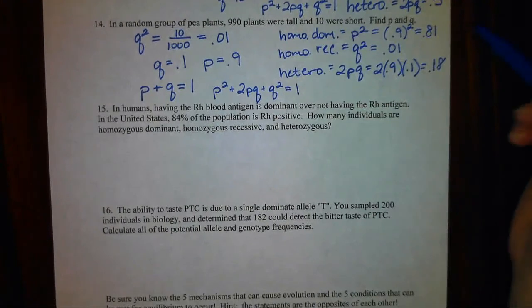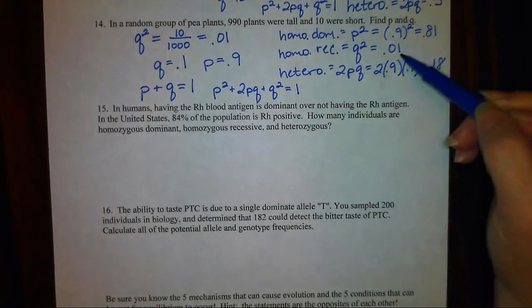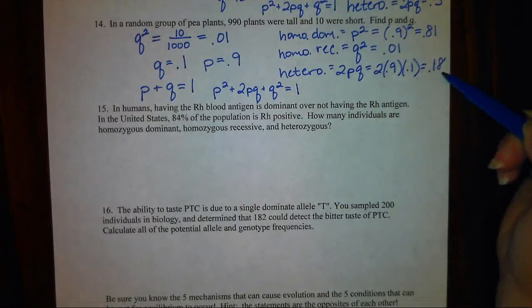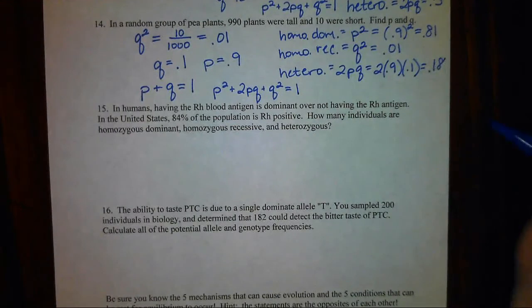So I can check myself: 0.81 plus 0.01 plus 0.18 should all add up to 1 because these three categories make 100% of my population.